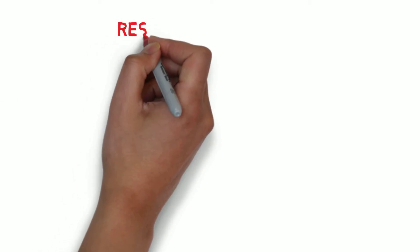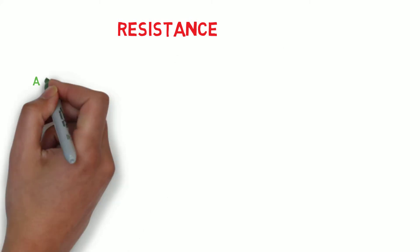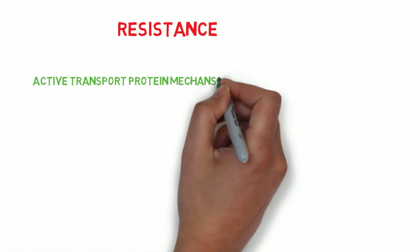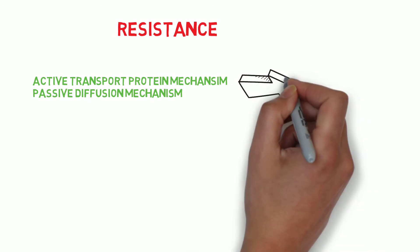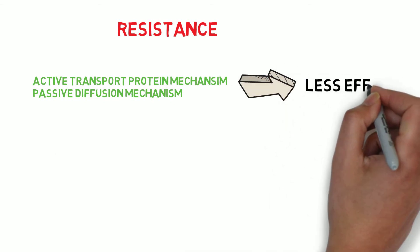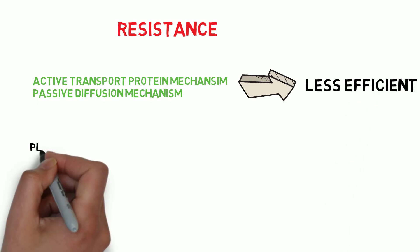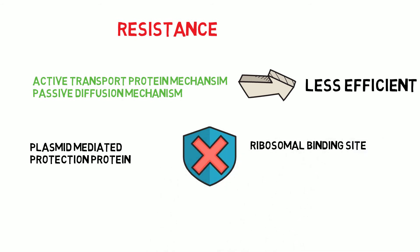Some bacteria may develop resistance against tetracycline. There is an active transport mechanism and passive diffusion mechanism which allows tetracycline to enter inside the bacterial cell. Resistance develops when this mechanism becomes less efficient, or bacteria may develop a plasmid-mediated protection protein which protects the ribosomal binding site from tetracycline.